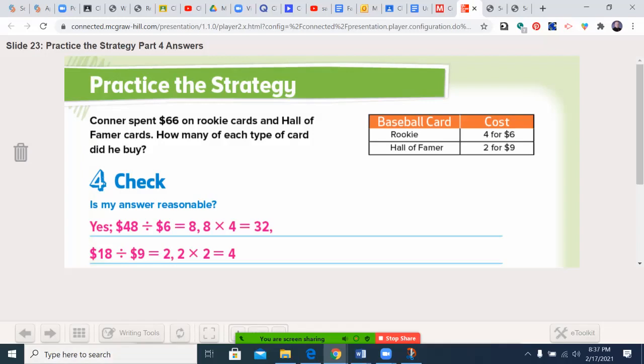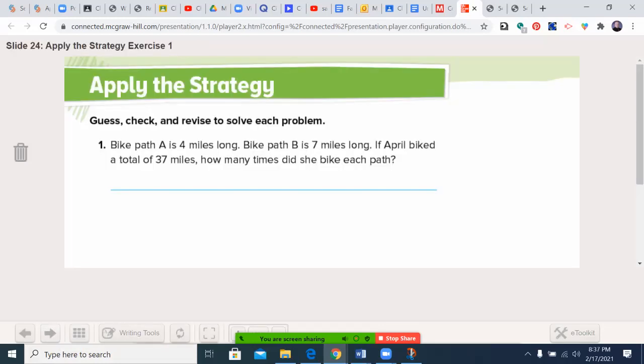Let's go ahead and move forward. You're going to try one. Bike path A is four miles long. Bike path B is seven miles long. If April biked a total of 37 miles, how many times did she bike each path? Remember your steps: understand what you know and what you need to find out. What's your plan? If you didn't just say it's guess, check, and revise, then you maybe want to stop and think about it. Go ahead and solve it and give yourself a mental check.